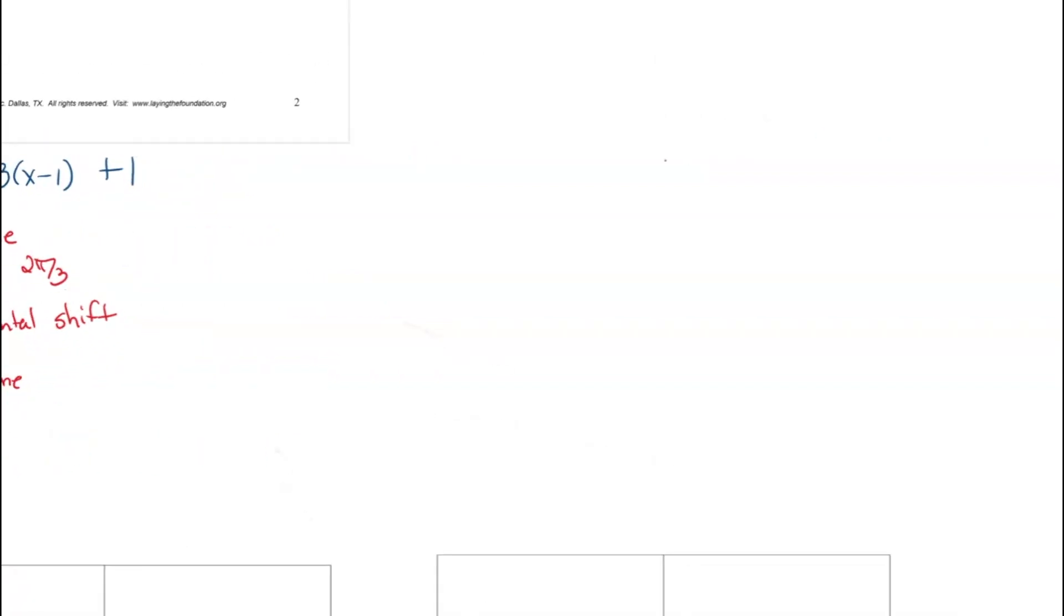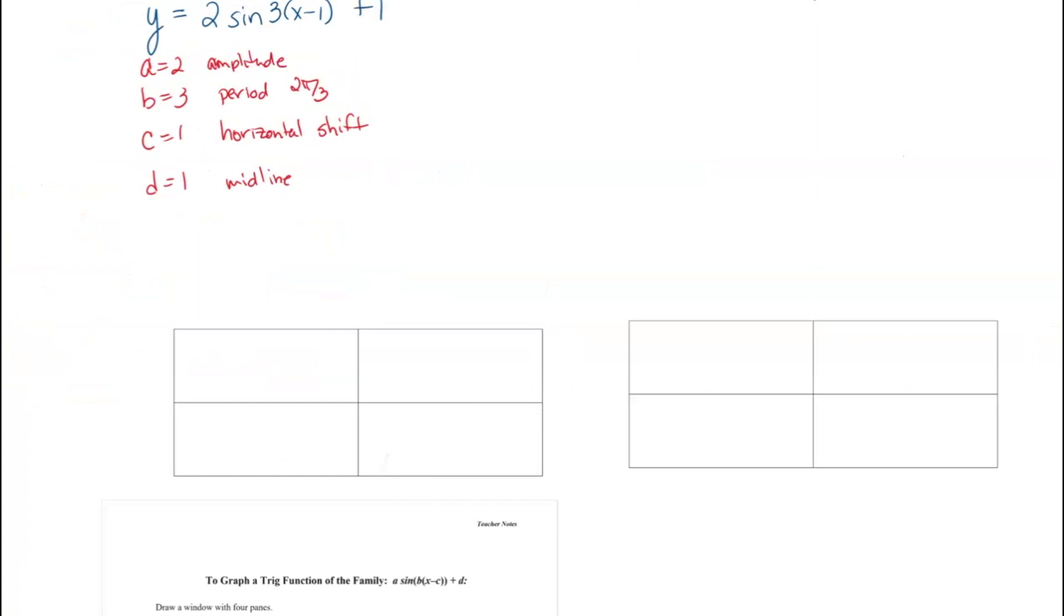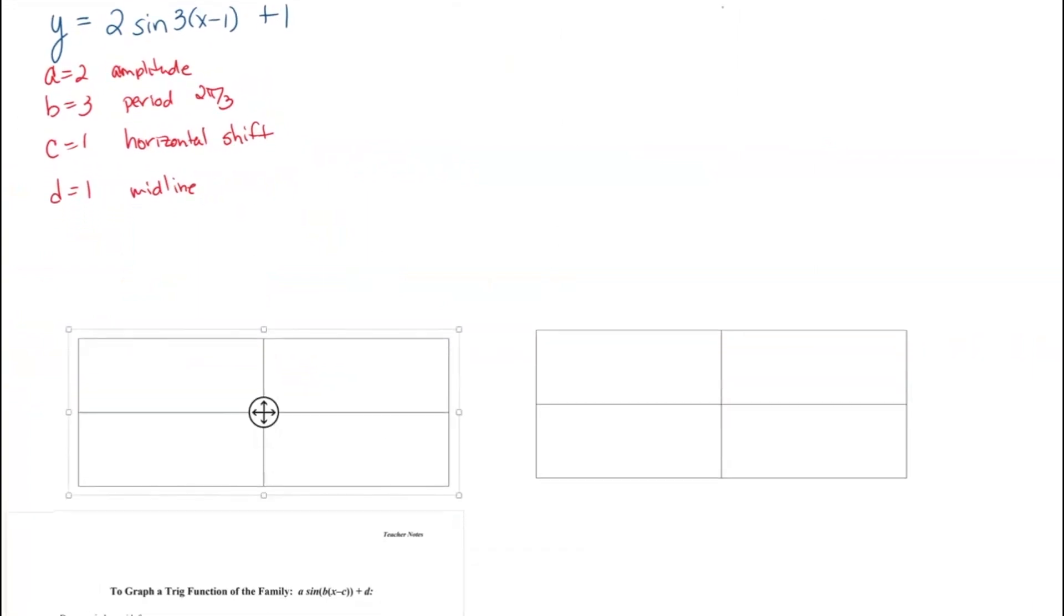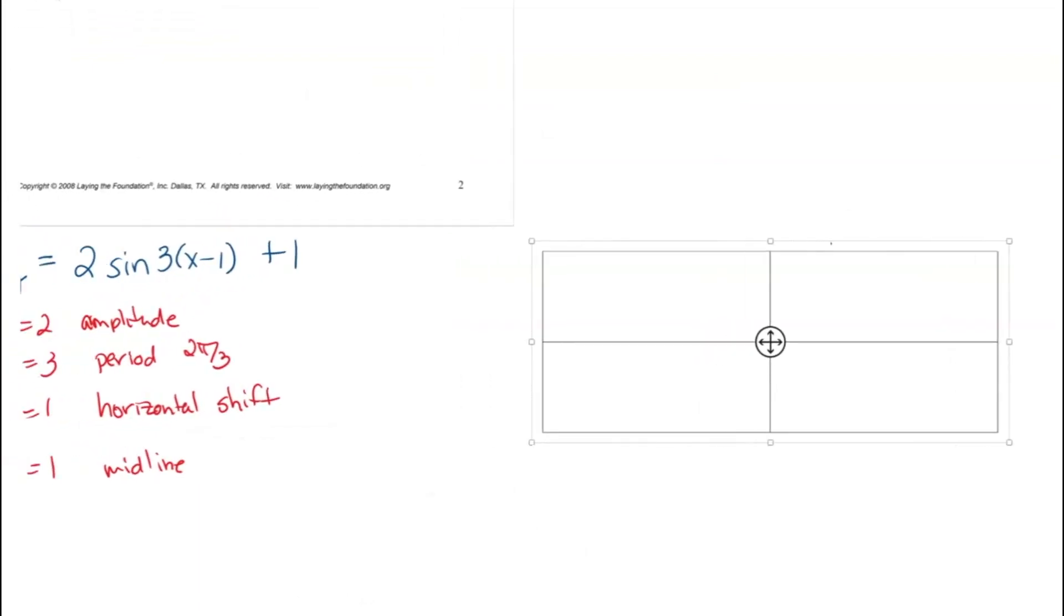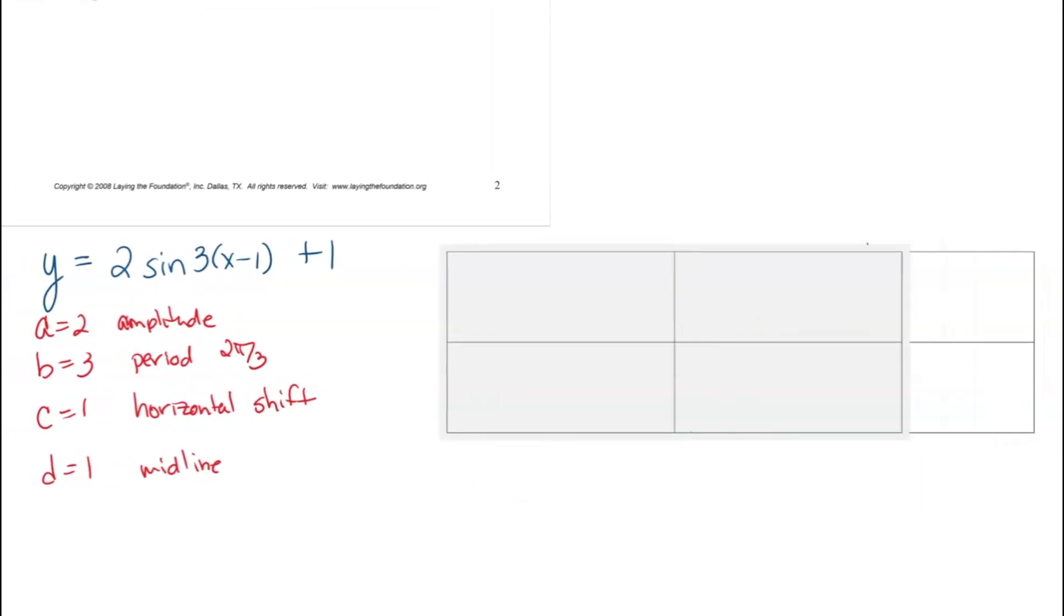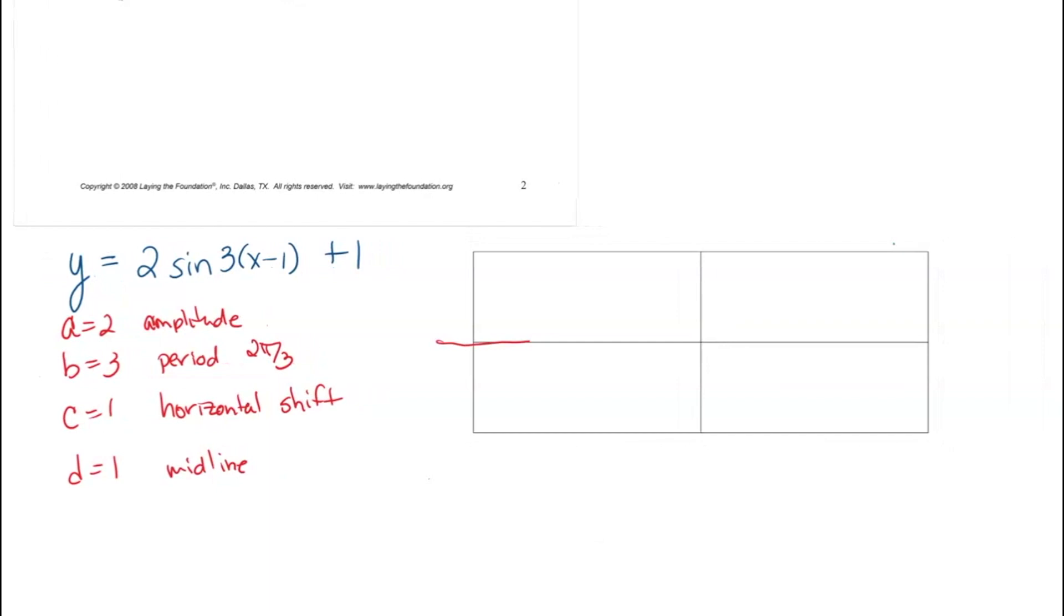If I have a windowpane here, it's going to look like this. I'm going to have a midline right there at 1, and my horizontal shift is also happening at 1, and my period is 2π over 3, and my amplitude is up 2 and down 2.